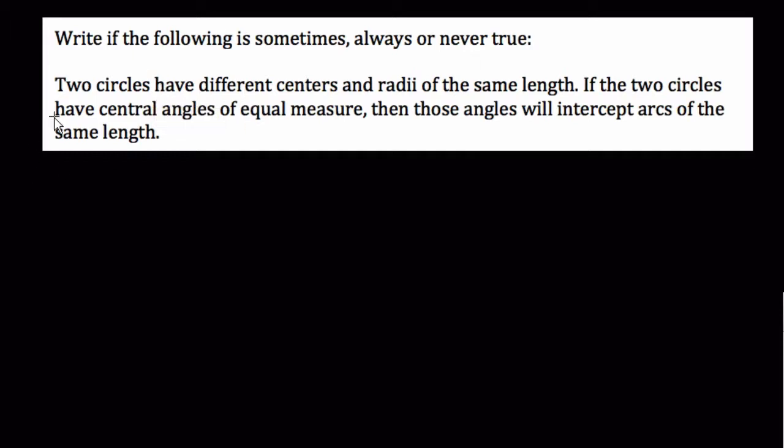We want to evaluate if this statement is sometimes, always, or never true. The statement is that you have two circles with different centers and radii of the same length. So that means we have a circle, and another circle, and the radii are of the same length.